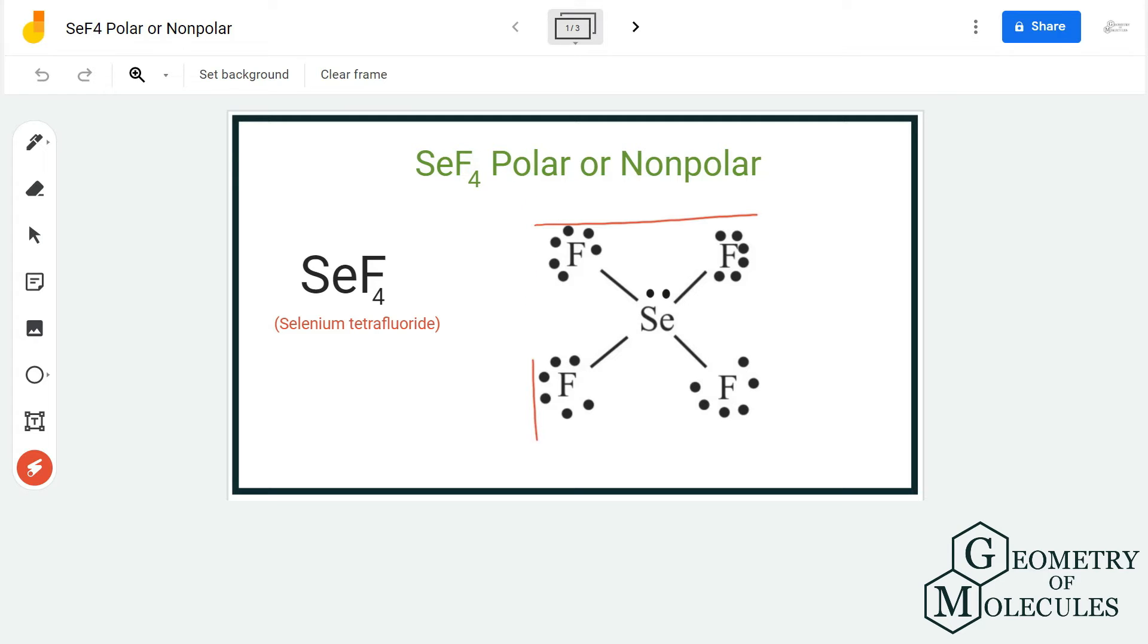Its shape, and to check if there is a net dipole moment in the molecule. So in SeF4, selenium is the central atom that is forming bonds with four fluorine atoms. If you look at its Lewis structure, selenium atom has a lone pair of electrons.